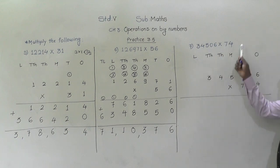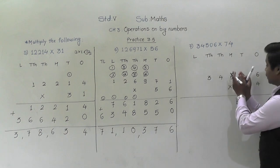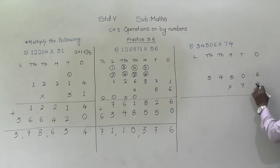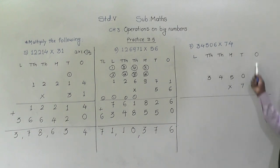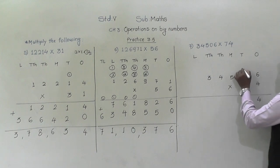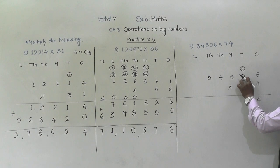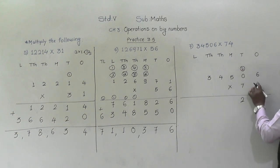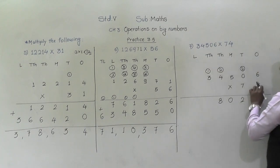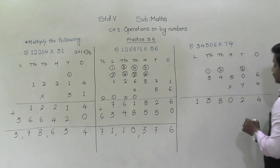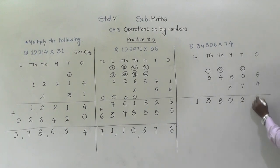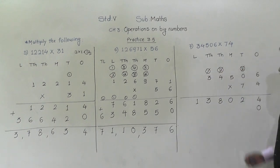Write each digit according to their places. Don't write too close or too far — each digit should come below its place name. First, we are going to multiply by the ones place digit, which is 4. Four sixes are 24 — 4 will come down, 2 will be carried. Four zeros are 0 plus 2 is 2. Four fives are 20 — 0 will come down, 2 will be carried. Four fours are 16 plus 2 is 18 — 8 will come down, 1 will be carried. Four threes are 12 plus 1 is 13.